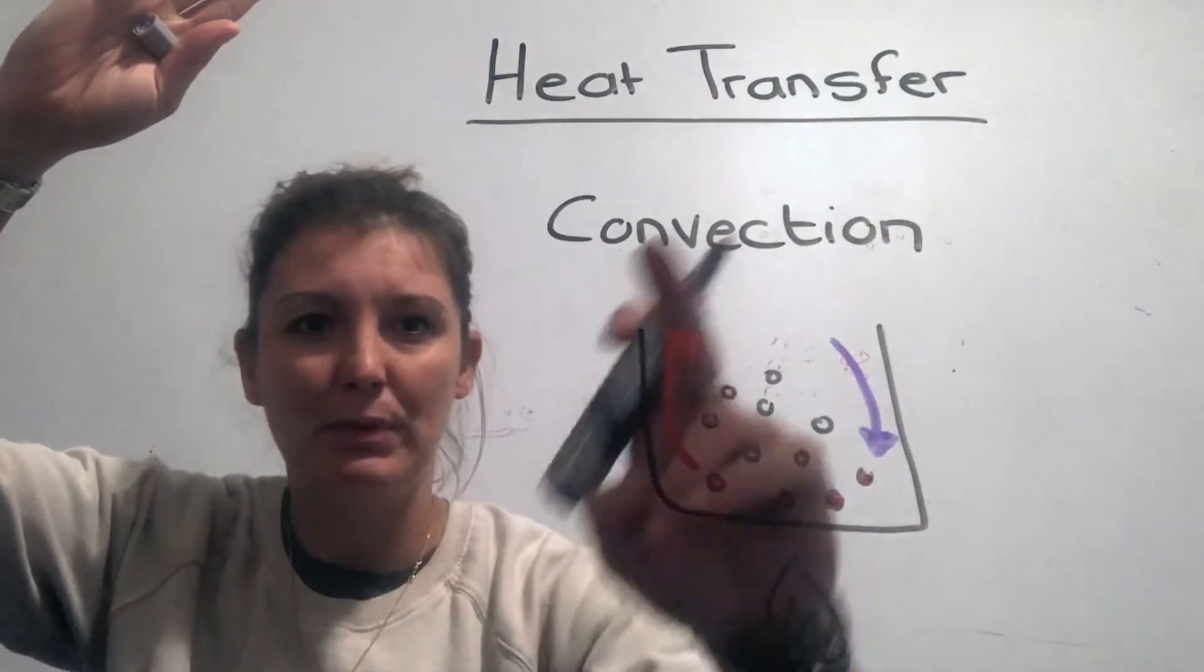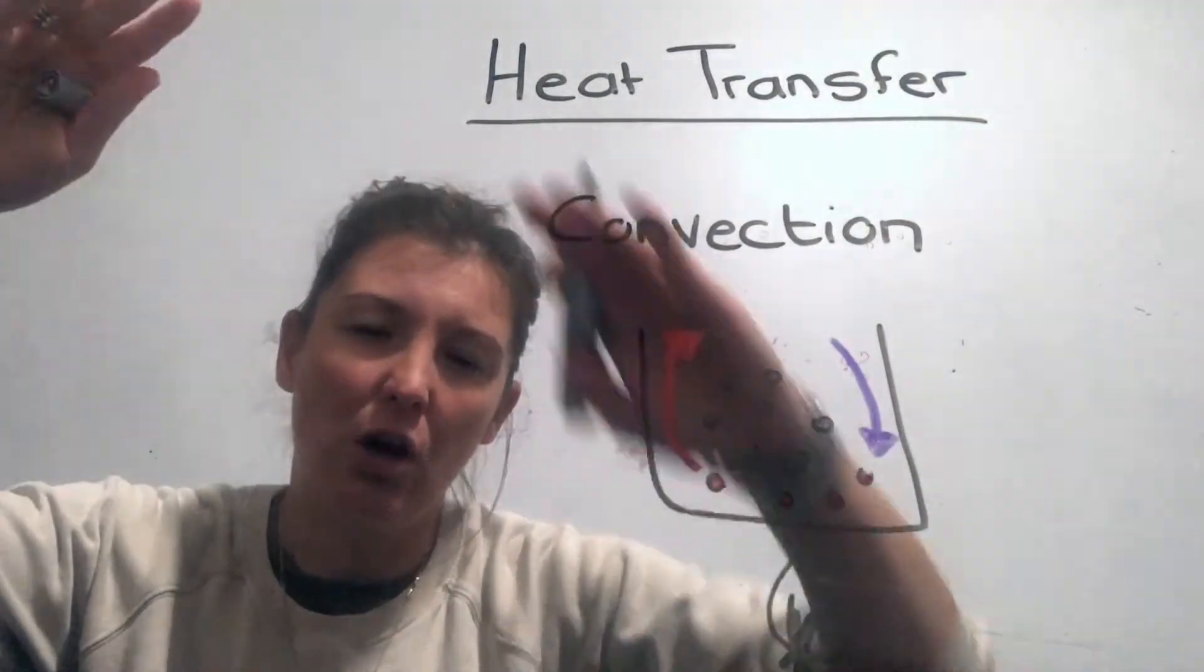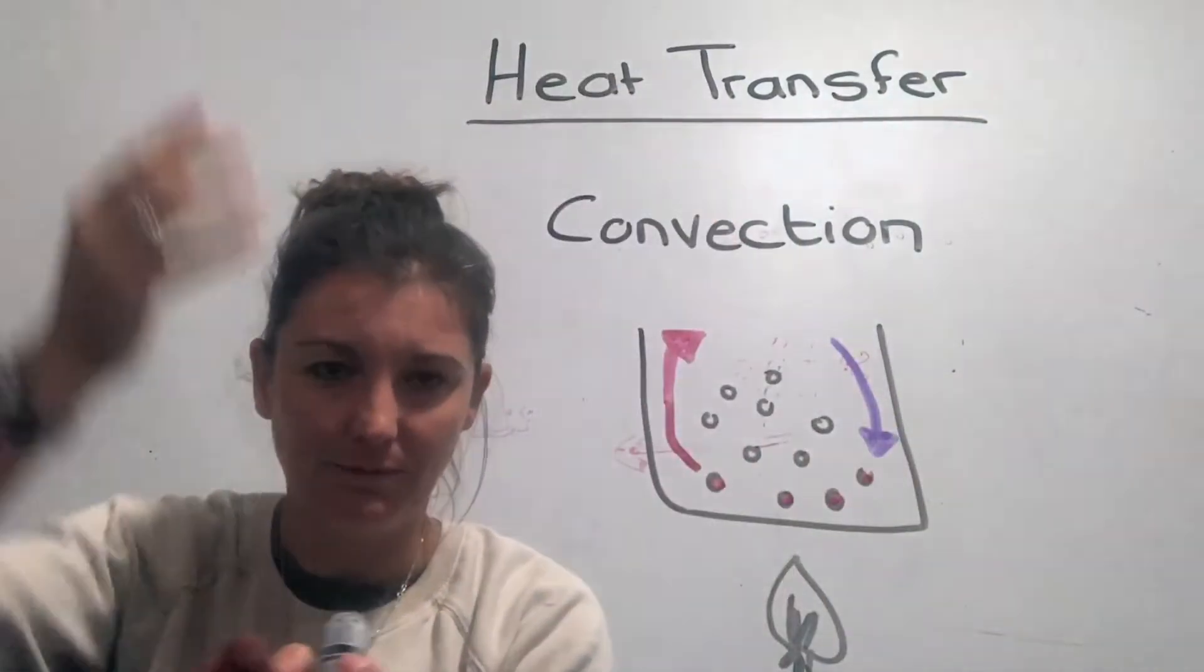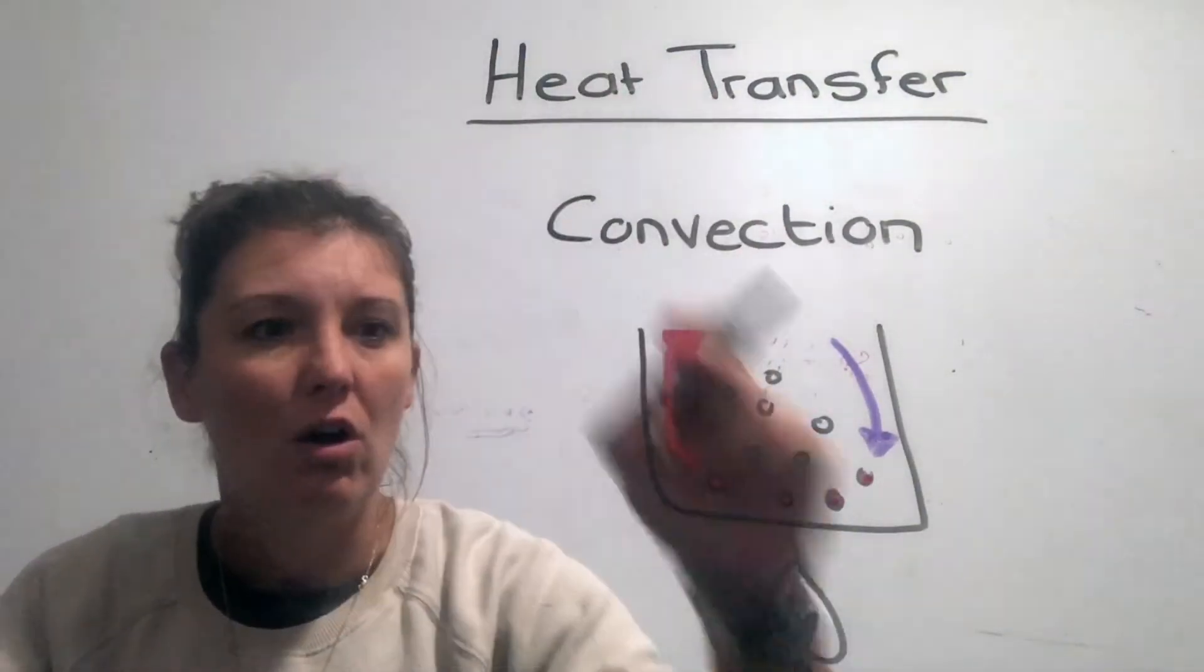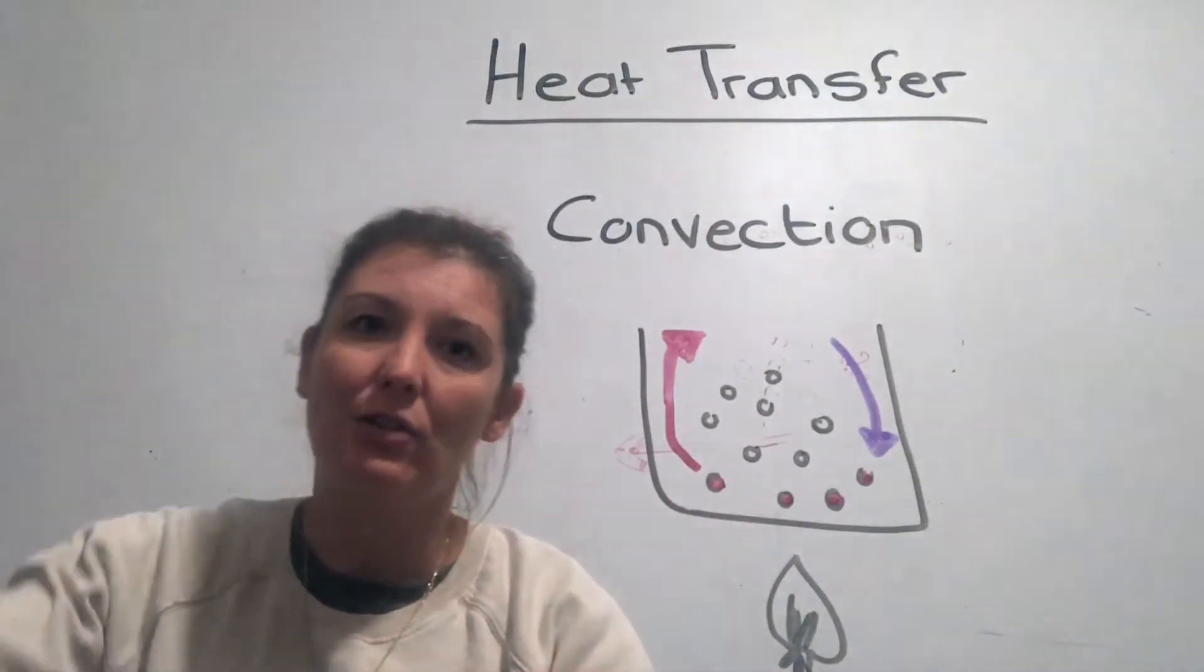And then those top ones, because they've been at the top for a while, they might have gotten a bit colder, so they drop down again. And so on. So over time we have this whole circulation of particles, hot particles going up and cold particles dropping.